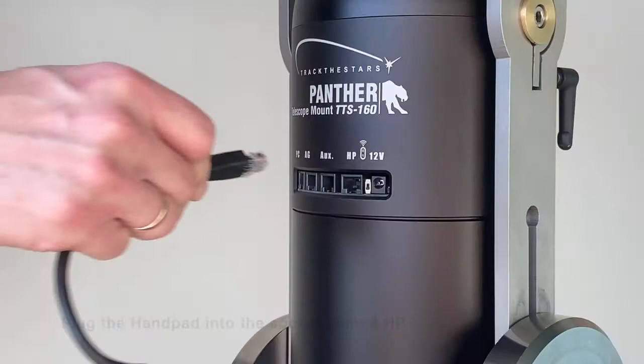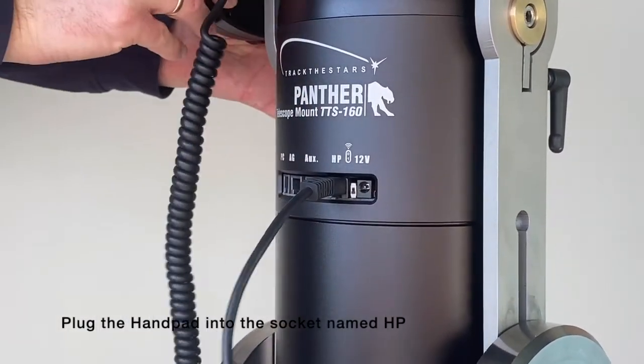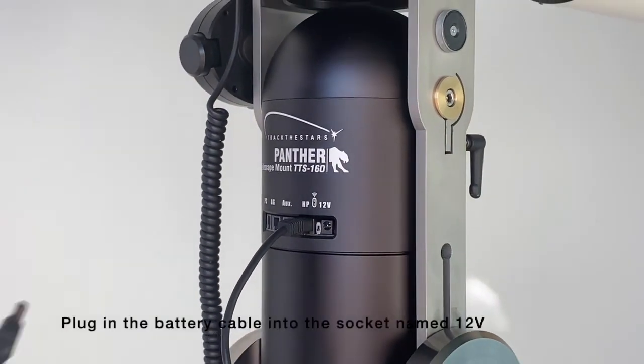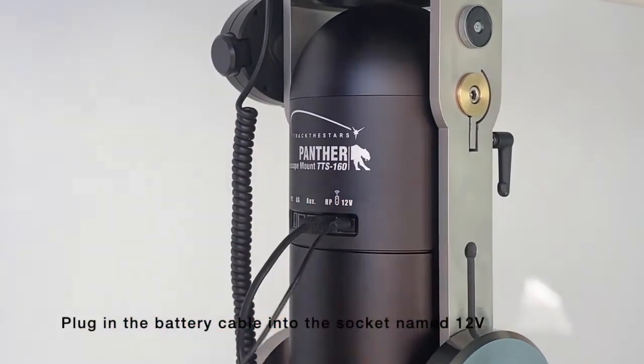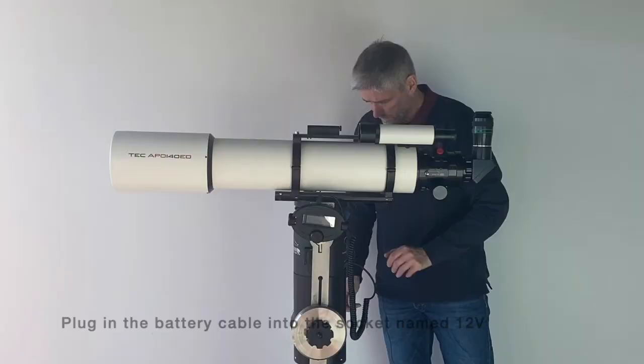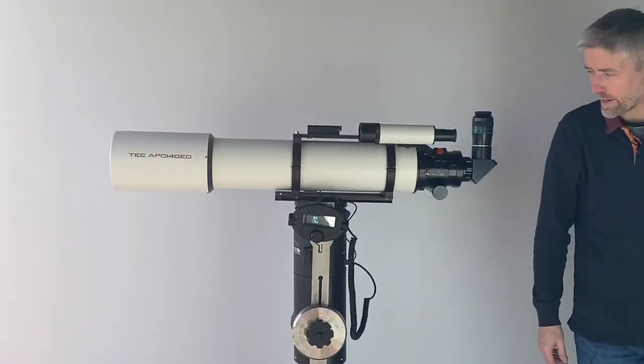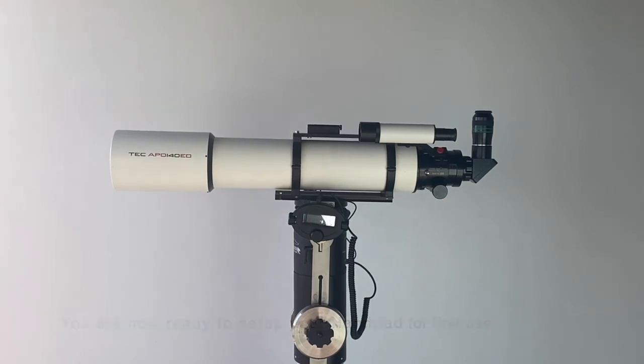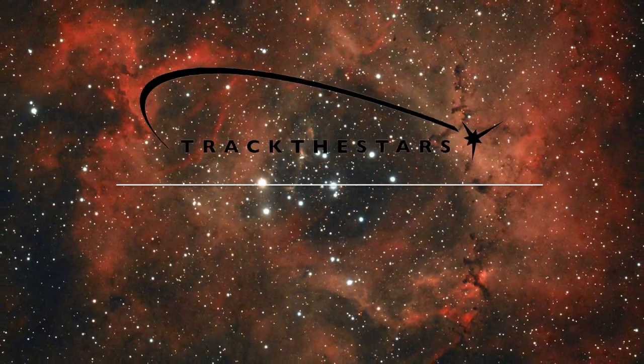Plug in the handpad into the socket called HP and your battery power must be connected into the socket called 12V. The mount will power up as soon as you plug in your battery. Now the mount is ready for the first use.